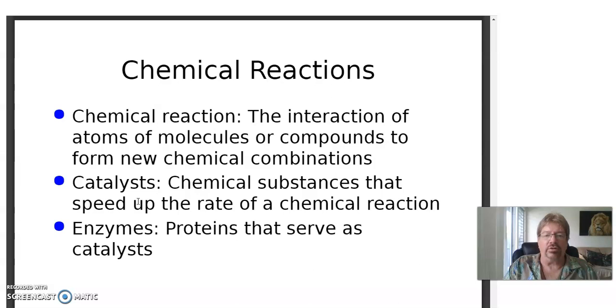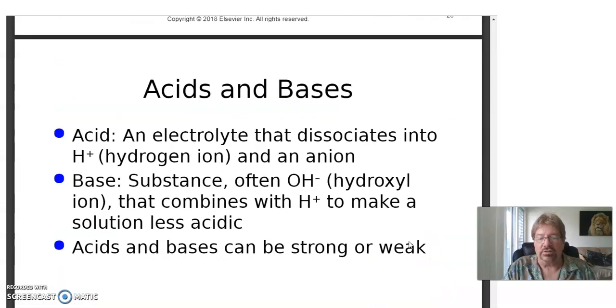Chemicals or substances that make a chemical reaction go faster with less energy are called a catalyst. On our cars we have catalytic converters to help with the emissions. Catalysts in biological systems are called enzymes, and enzymes are very important. So again, a catalyst: chemical substances that speed up the rate of a chemical reaction. If they're in biological systems, they're known as enzymes, and you might as well memorize that word right now because it's real important.